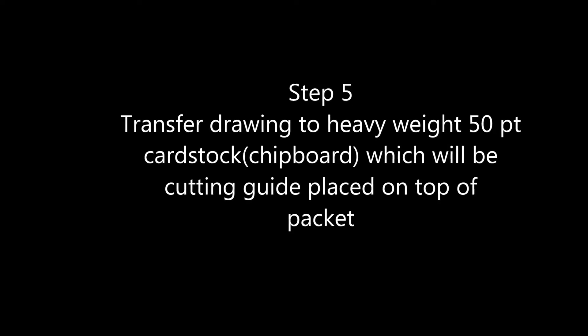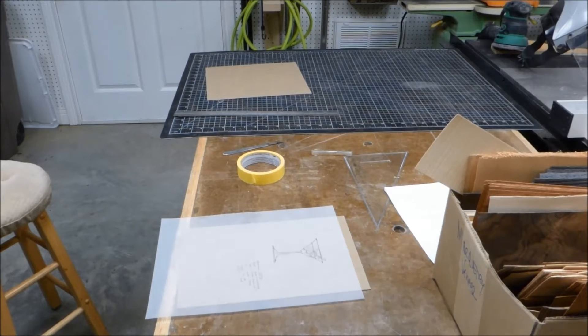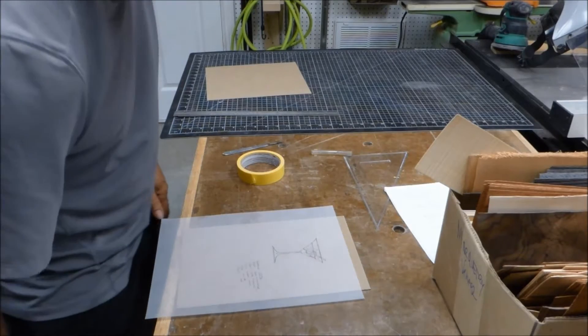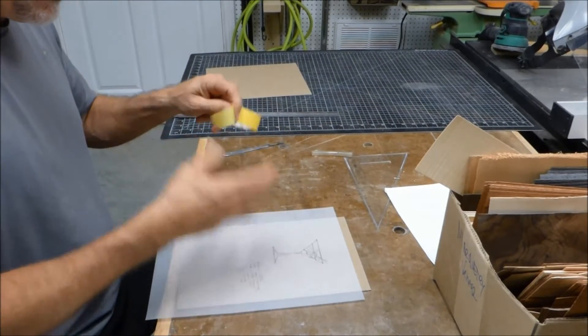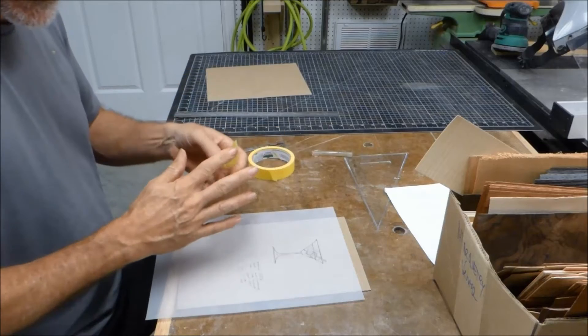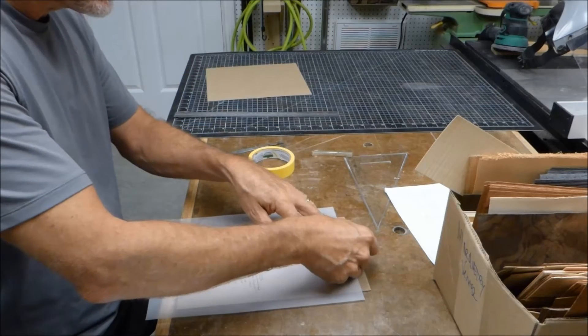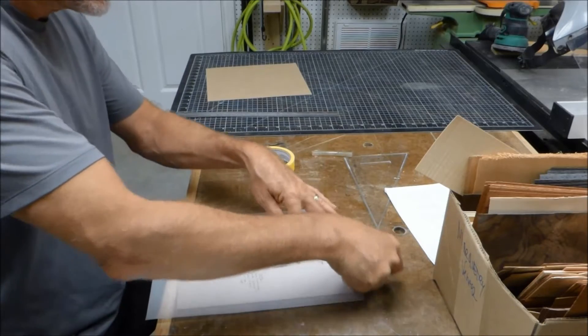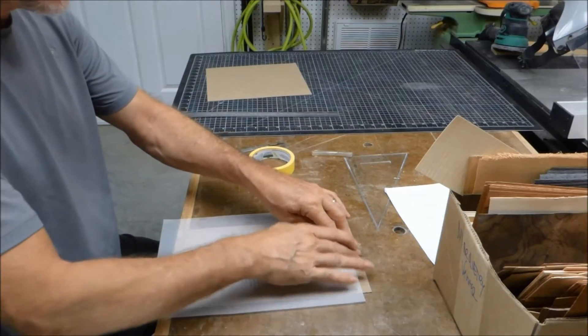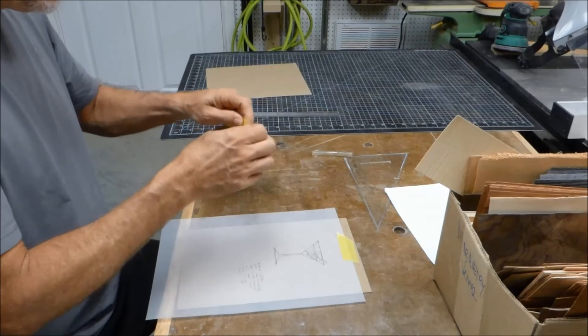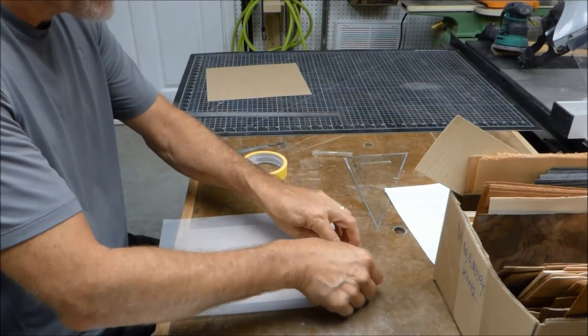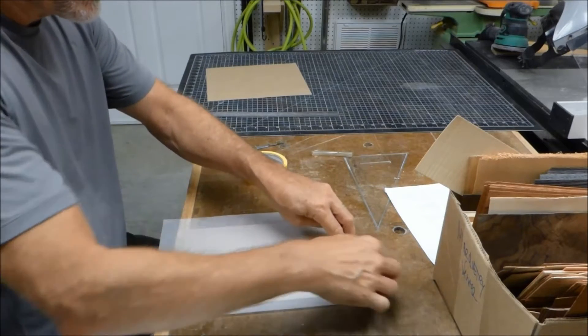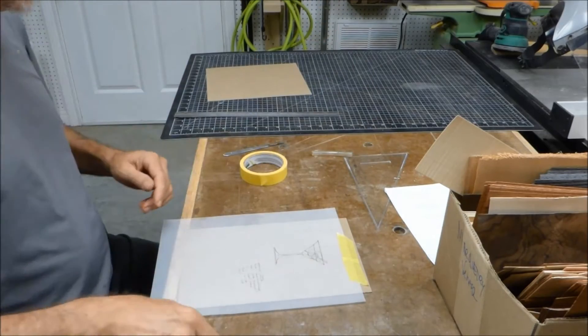The next step is to transfer the drawing that we've made to a piece of heavy cardstock, otherwise known as chipboard. This will serve as the guide for doing the cutting. You can see here I'm taping the tracing onto the cardstock which is below it, and I'm going to trace that onto there. Now an alternative to tracing it like this is you can glue a drawing on. I've just run into problems with that. If it isn't glued really well, as you start doing the cutting, bits can start falling off, and that causes problems. So usually what I do is trace it on.